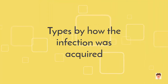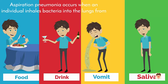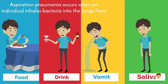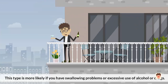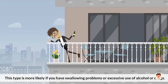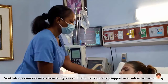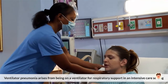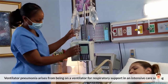Aspiration pneumonia occurs when an individual inhales bacteria into the lungs from food, drink, vomit, or saliva. This type is more likely if you have swallowing problems or excessive use of alcohol or drugs. Ventilator pneumonia arises from being on a ventilator for respiratory support in an intensive care setting.